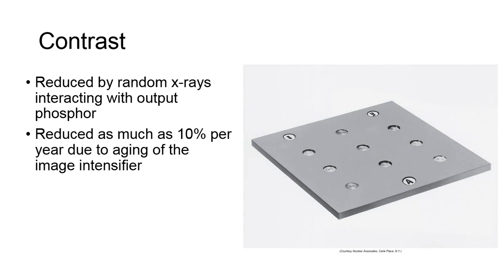Though one might initially think this would improve the image, this area of light on the output phosphor is not representative of patient anatomy and is not consistent with the differential absorption properties of other light production at the output phosphor. This random contribution reduces image contrast in the fluoroscopic image.